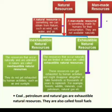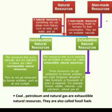Exhaustible natural resources are the resources that occur naturally but are limited in nature. These resources can get exhausted by human activities and might disappear altogether or take hundreds and thousands of years to replenish. For example: forests, wildlife, minerals, coal, petroleum, natural gas, etc. These are the examples of exhaustible natural resources.